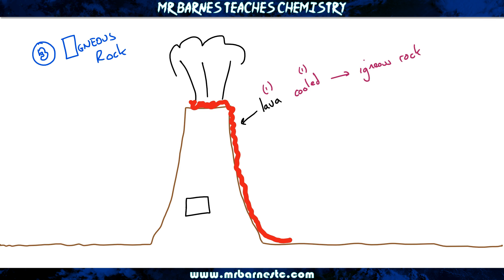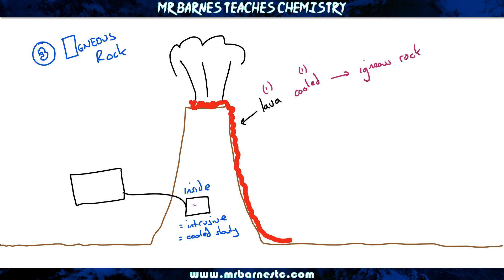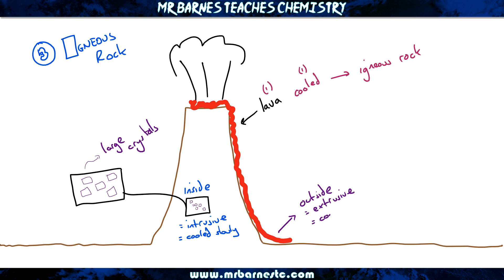There is extra information that you do need to know, and that is how you get different size crystals. If we have a look inside the volcano — inside it would be called intrusive, a nice key word for you. If it's intrusive, it means it cools slowly, and if it cools slowly, as you can see from my little diagram here, we're going to get large crystals. And if it cools quickly, which is on the outside of the volcano, it's going to be exactly the opposite. It's called extrusive — it cools really quickly, and you get smaller crystals.